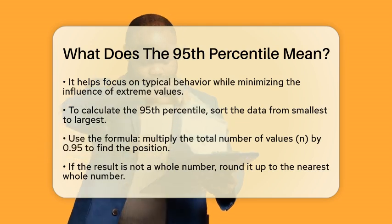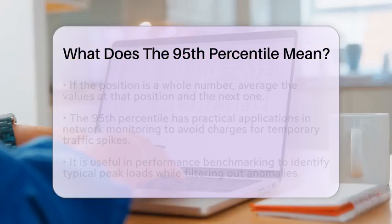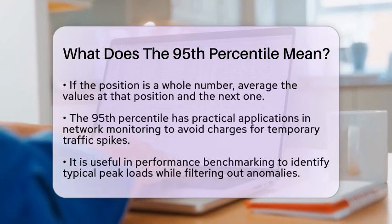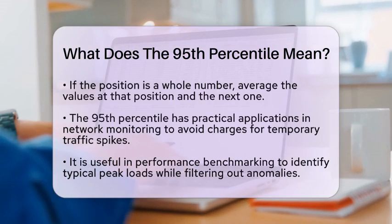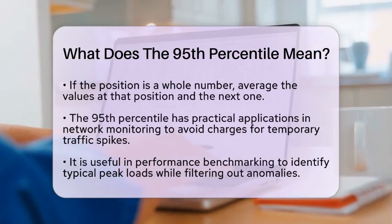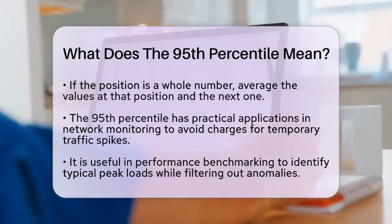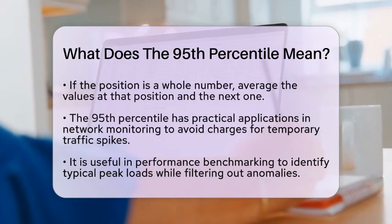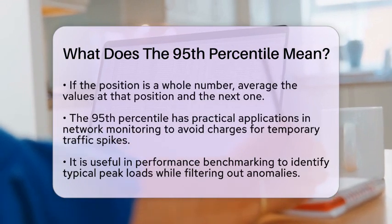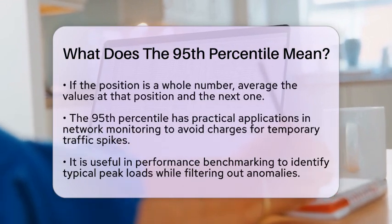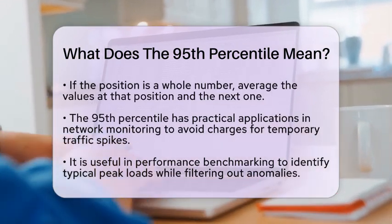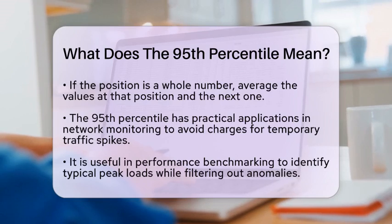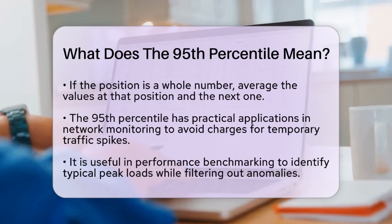This measure has practical applications in various fields. In network monitoring, the 95th percentile helps companies avoid charging for brief spikes in traffic — instead it focuses on sustained high usage, which is more indicative of overall performance. In performance benchmarking, it helps identify typical peak loads while filtering out temporary spikes that might skew the data.